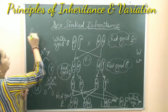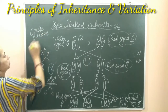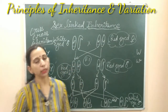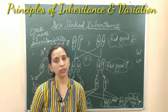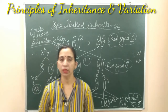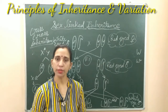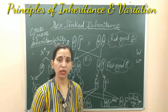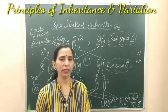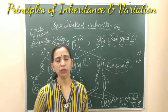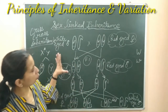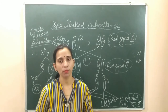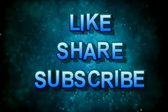This was about the Drosophila eye color sex-linked inheritance. A similar type of sex-linked inheritance is also found in human beings. Examples of this type of inheritance in human beings are haemophilia and color blindness. These two diseases are transmitted through sex-linked genes. We will discuss these two diseases in more detail when we take up the topic of genetic disorders.